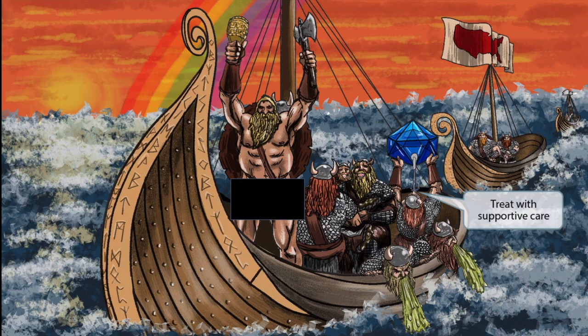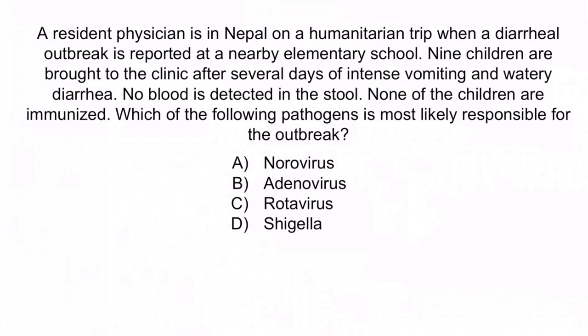Now that we've covered the image, let's do a question. A resident physician is in Nepal on a humanitarian trip when a diarrheal outbreak is reported at a nearby elementary school. Nine children are brought to the clinic after several days of intense vomiting and watery diarrhea. No blood is detected in the stool. None of the children are immunized. Which of the following pathogens is most likely responsible for the outbreak? A) norovirus, B) adenovirus, C) rotavirus, or D) shigella. From the question stem, a diarrheal outbreak in Nepal has affected unimmunized children. This, in conjunction with the absence of blood in the stool, should immediately make you think of viral gastroenteritis. Because this is occurring in a developing country and the children are unimmunized, the pathogen is most likely rotavirus. So the correct answer is C, rotavirus.